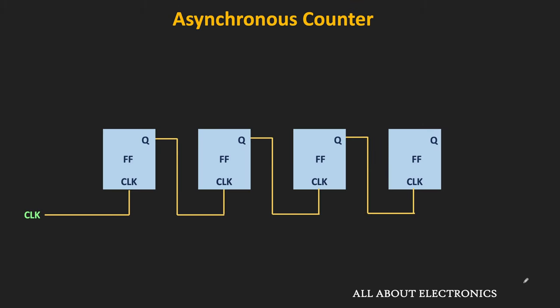In the previous video on counters, we have seen that in asynchronous counters, only one flip-flop receives the clock signal, and the output of that flip-flop is connected to the clock input of the next flip-flop. So the output transition in the flip-flop acts as a clock signal for the next flip-flop.